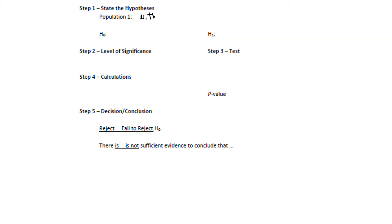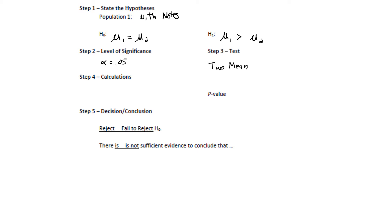Population 1 is with notes. The null hypothesis, if it's a two-mean test, will be mu sub 1 equals mu sub 2. In H sub 1, we'll compare mu sub 1 to mu sub 2, and the sign we're going to use is greater than, because the claim is that students who use notes will have higher scores than students without notes. The level of significance was 0.05, and the test appears to be a two-mean test. We're going to go to StatCrunch and check the conditions. If the conditions are okay, we'll perform the two-mean test; if the conditions fail, we'll switch to Mann-Whitney.